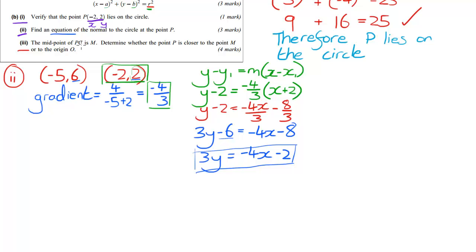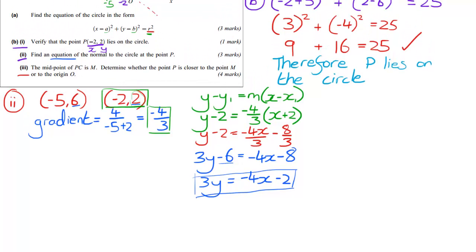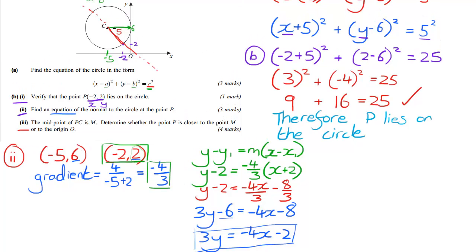Last question: the midpoint of PC. We have C over here, we have P down here. So we're going to have some midpoint M here. Determine whether the point P is closer to the point M or closer to the origin. We have to find out where the midpoint is and then decide whether this purple point is closer to O, the origin at 0, 0, or whether it's closer to M. We're going to need Pythagoras for that.